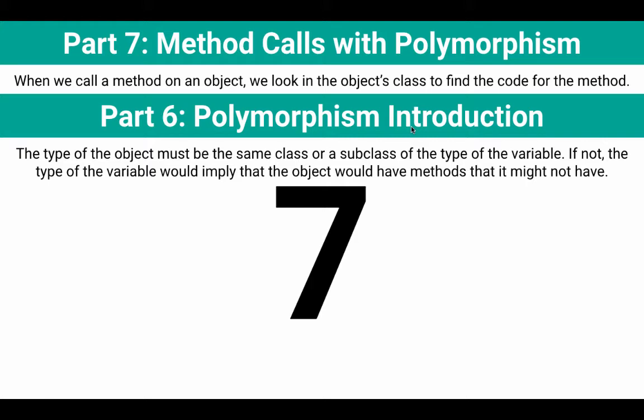But here really, I want to reinforce the idea that when we call a method on an object, we look in that object's class to find the code for that method, even when we've got complicated things going on with polymorphism.